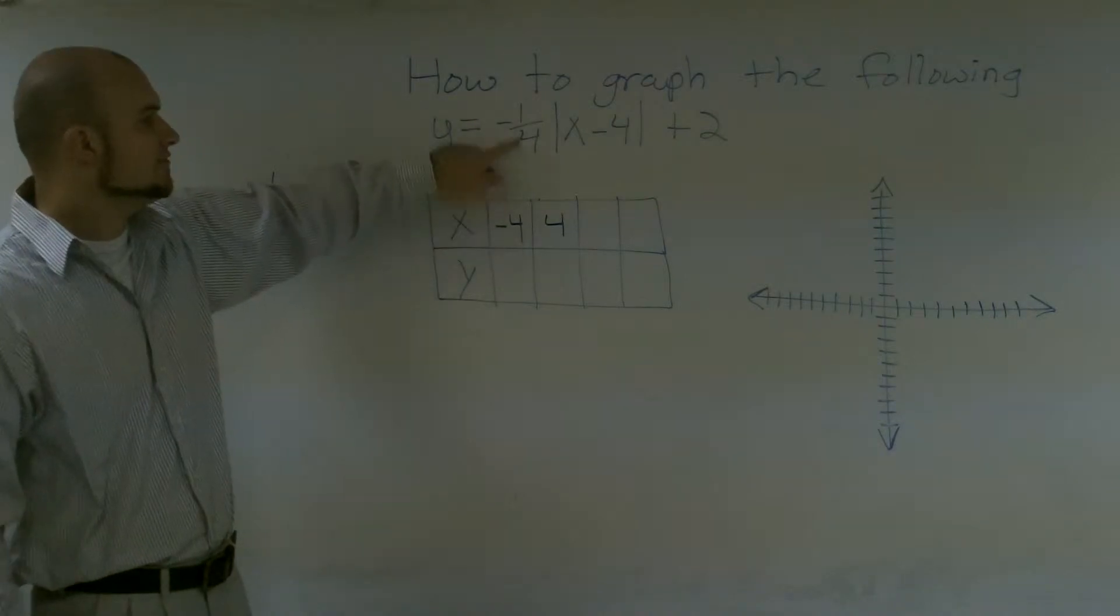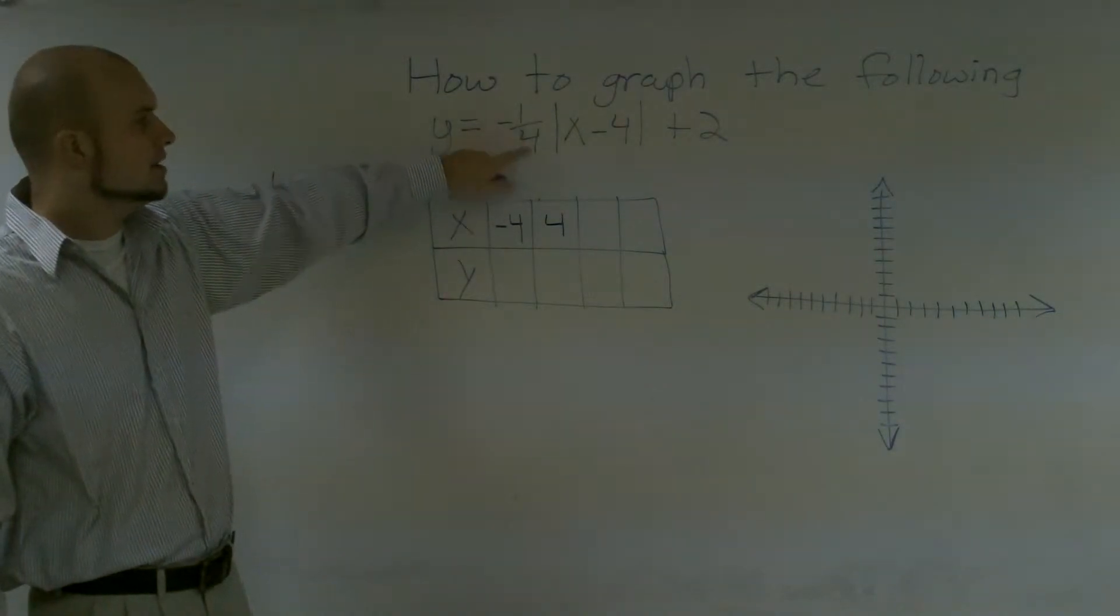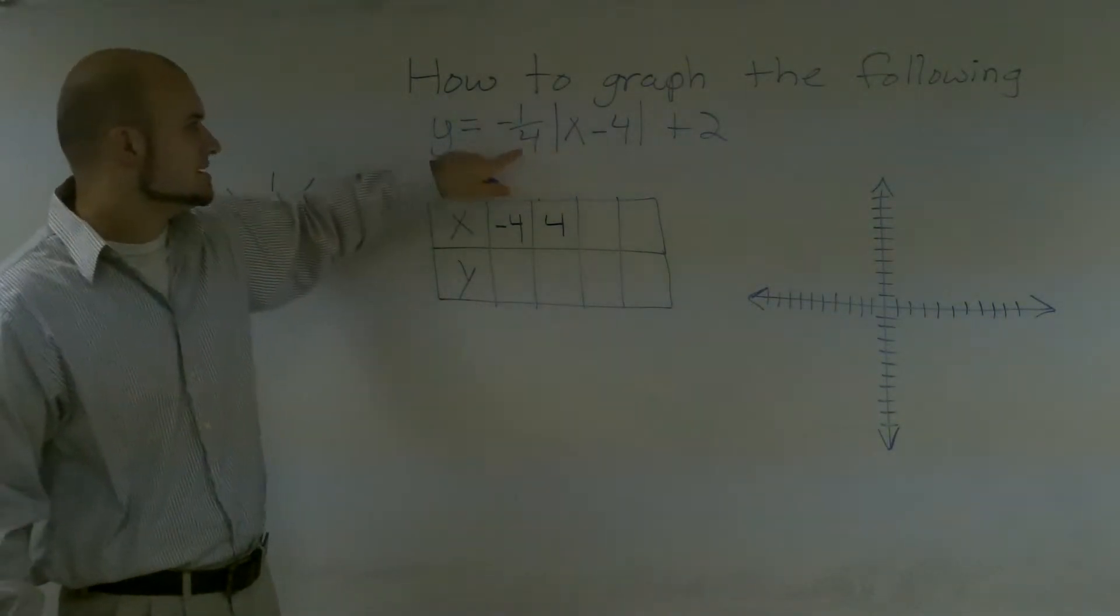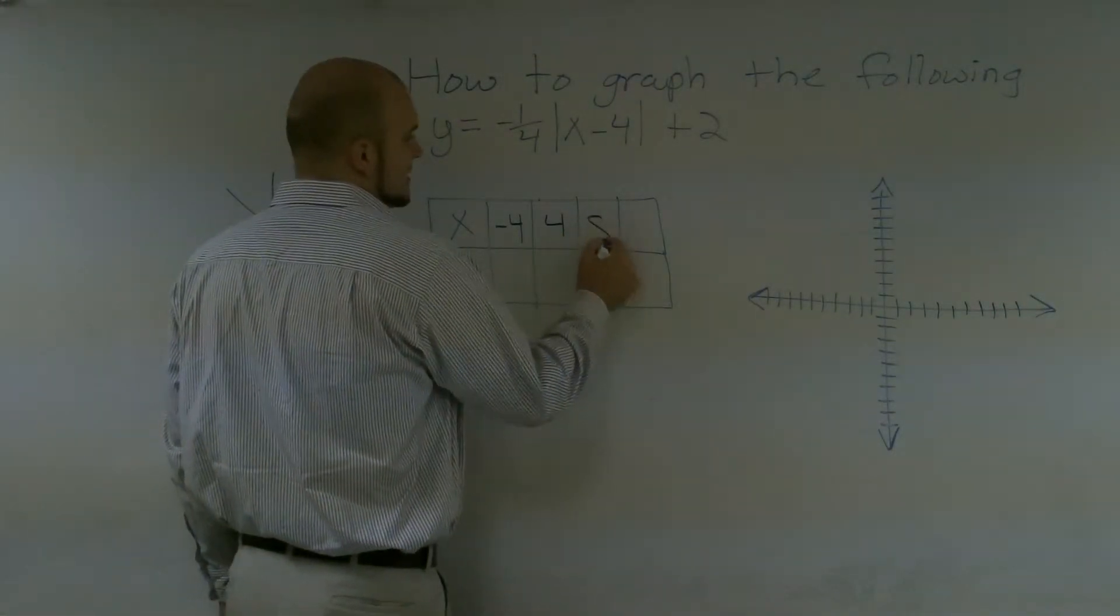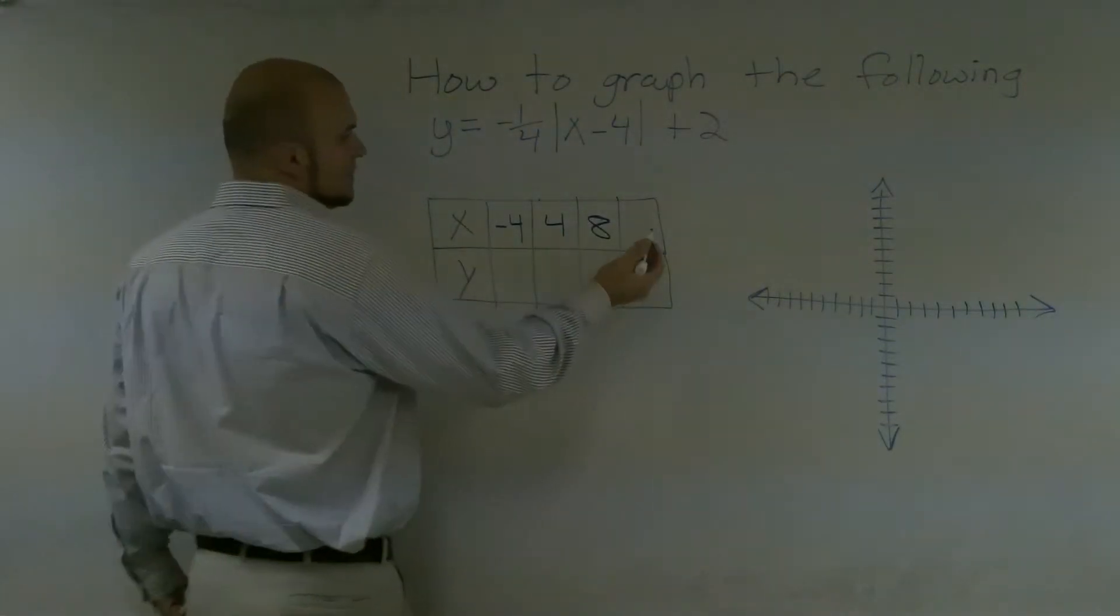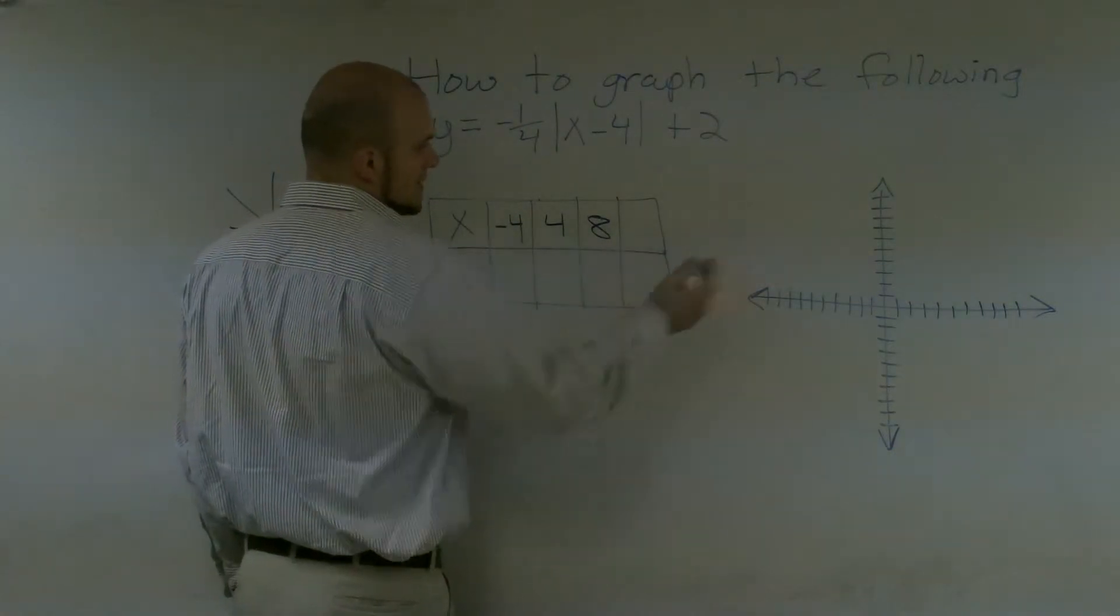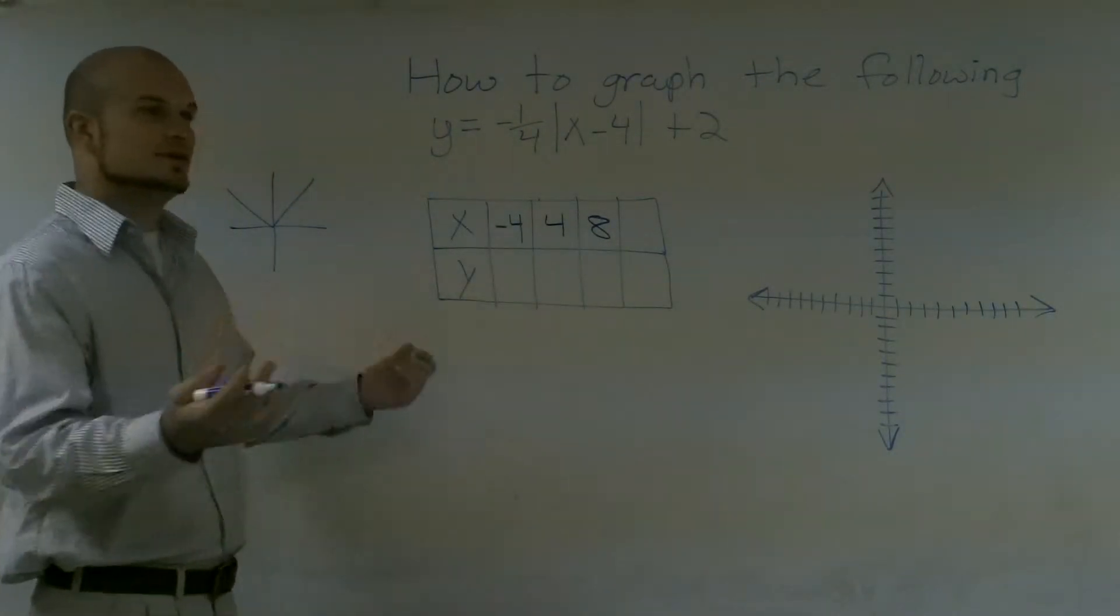Because I know that negative 4 is going to be a multiple of my, whenever I put in here, it's going to be a multiple of 4. And then my other two numbers, I'm just going to pick 8. And if we want to do another one, we could do 12, but I don't have that right in my graph. So now let's go ahead and plug them in.